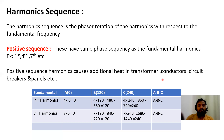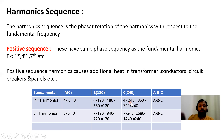Positive sequence harmonics follow the same phase sequence as the fundamental frequency. Examples are the 1st, 4th, and 7th harmonics. For the 4th harmonic: 4×0=0, 4×120=480, and 480−360=120. Then 4×240=960, and 960−720=240. So the phase rotation is 0, 120, 240 — the same as our fundamental. The 7th harmonic similarly gives 0, 120, 240. These are called positive sequence harmonics.